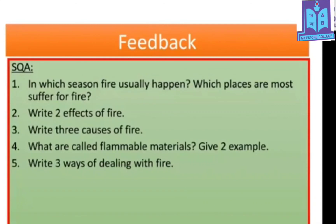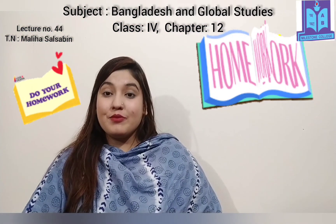What are flammable materials? Give two examples. Flammable materials are those materials which can burn easily — for example, chemicals from factories and paint colors. Write three ways of dealing with fire: we should never go back into a fire to save property; we should save ourselves first; and we should inform the fire service.